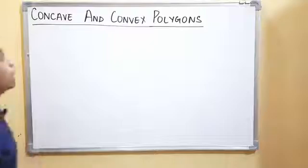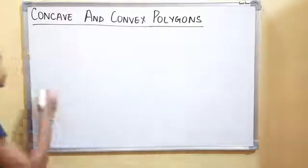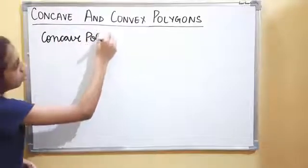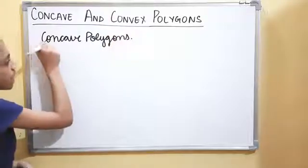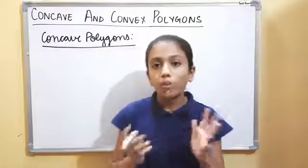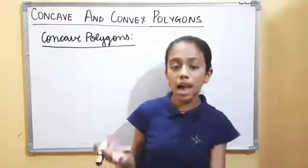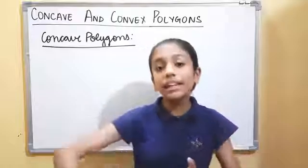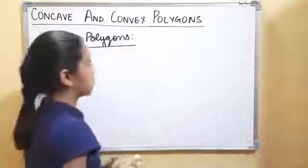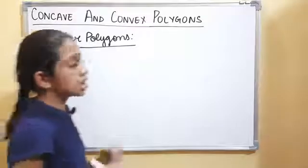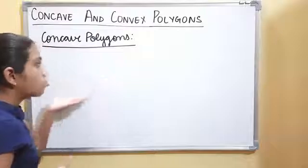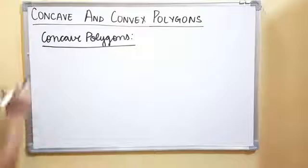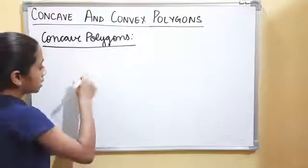Now let's talk about concave polygons. In convex polygons, diagonals are drawn only inside the shape. But in concave polygons, we can draw diagonals outside the shape as well as inside. Let me explain with an example.